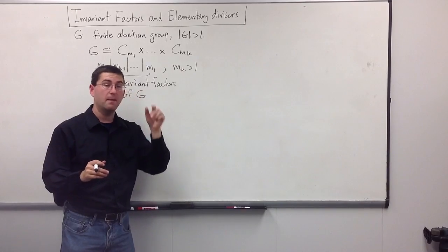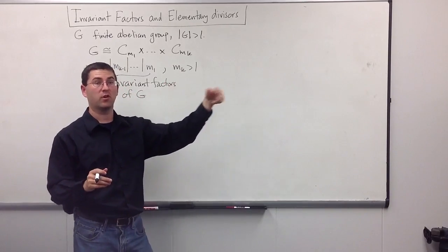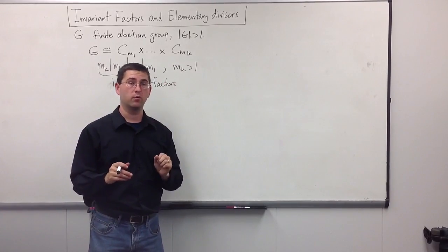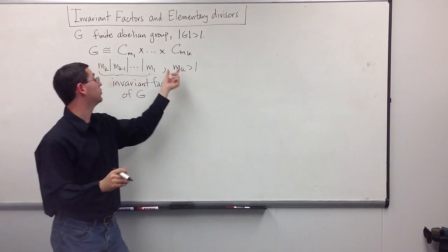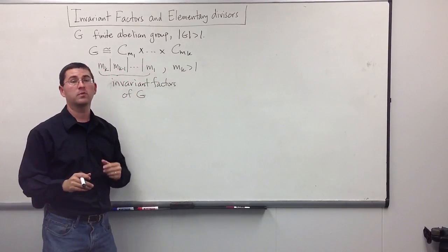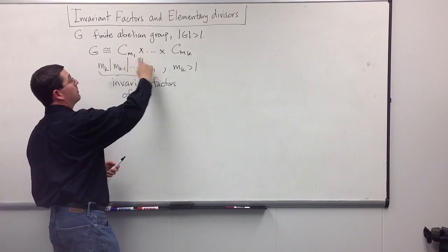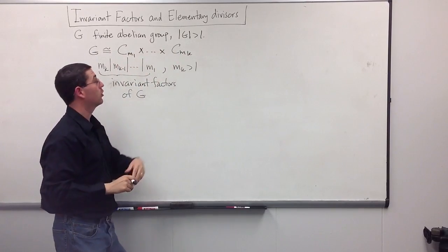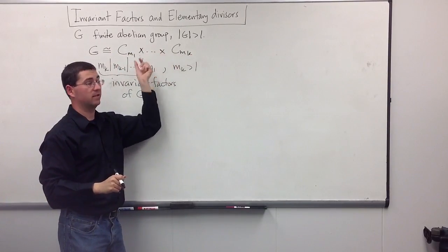And the last video, where we showed that CmN is isomorphic to Cm cross Cn when M and N are relatively prime, allows us to break up these numbers in terms of their prime factors. And correspondingly, we can break up these cyclic groups in terms of the prime factors of these MIs.